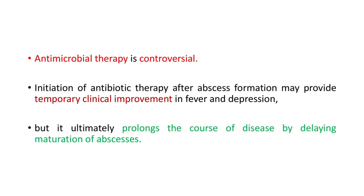For horses with fulminant clinical disease, tracheostomy may be required in horses with retropharyngeal abscessation and pharyngeal compression. Antimicrobial therapy is controversial in strangles. Initiation of antibiotic therapy after abscess formation may provide temporary clinical improvement in fever and depression, but it ultimately prolongs the course of disease by delaying the maturation of abscesses.